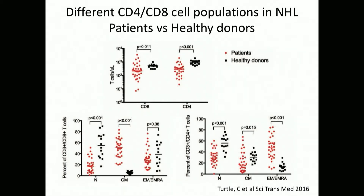In our studies at the Fred Hutchinson Cancer Center, we think it's really important that the T-cells a patient has are different than what a normal person has. Looking at CD4/CD8 ratios and naive, effector memory, or central memory phenotypes, you can see how different normals are from patients. We decided it's important what type of T-cells you're making a CAR from, so we actually make two CARs — one from CD4 cells and one from CD8 cells — and give them back in a one-to-one ratio.